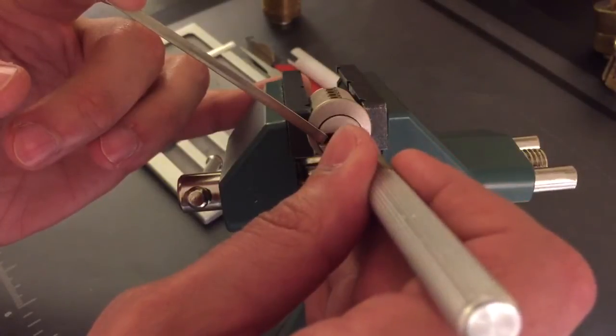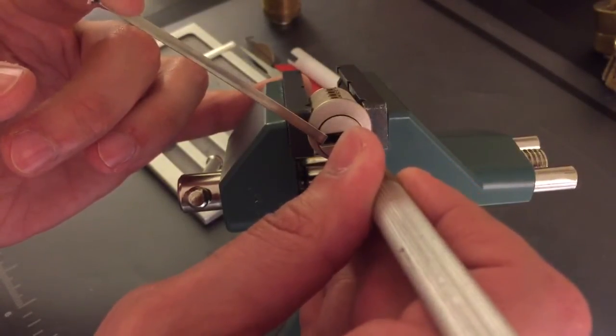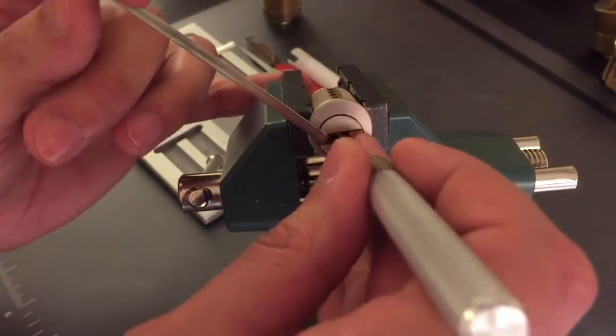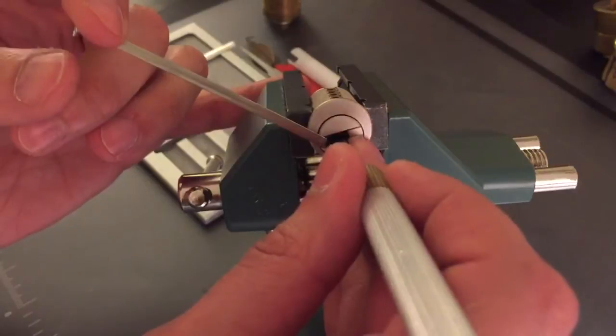That was the interactive chamber. Now I'm on 1 with the outer pin. Okay. We got a nice little false set there, which means probably all of our outer pins are set.